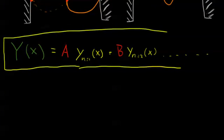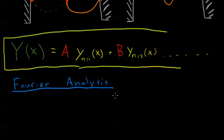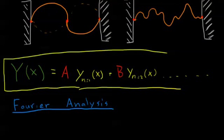This idea is the main idea of something called Fourier analysis — or Fourier, depending on how hard or soft you want to pronounce the R. He's a French fellow, so the R might be rather soft, but there's great disagreement on how to pronounce his name. This topic isn't covered yet on Khan Academy as of when I'm making this video, but at some point I'll include it in a playlist or make a playlist all about it. I just wanted to put this term in your mind and link these two ideas, since it's a big thing in physics.